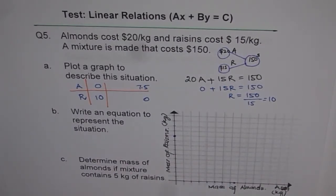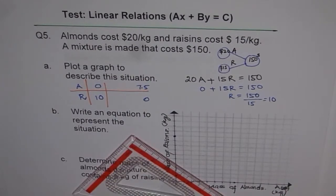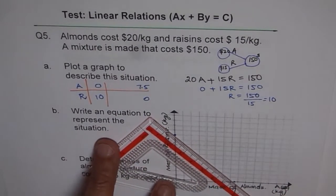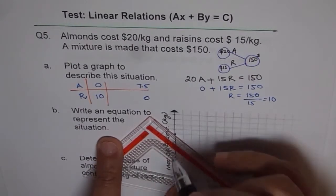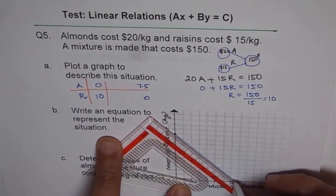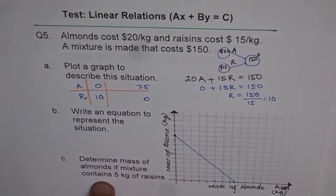Now you see this relation is a linear relation. And therefore, we can join these points. Once you join these points, you get a line.